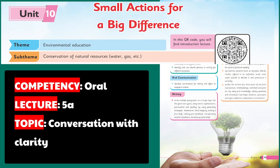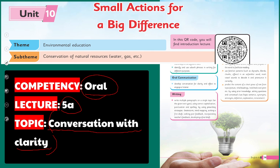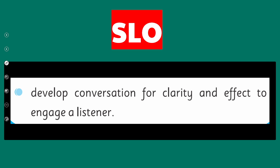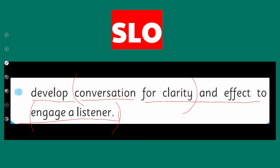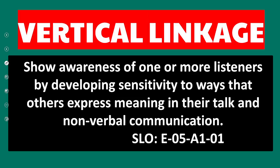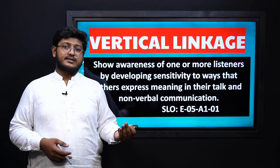Here we have the SLO about the competency of oral communication and it is our lecture 5A. Our main topic in this lecture will be conversation with clarity — how to conversate with clarity. The SLO states: develop conversation for clarity and effect to engage the listener. In this SLO we will cover what oral communication is, how we can conversate with clarity, what are the rules to conversate with clarity, and how we can engage the listeners.